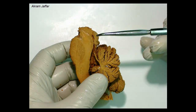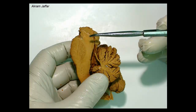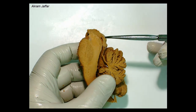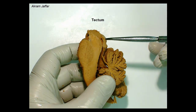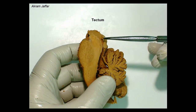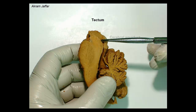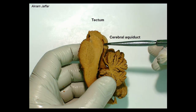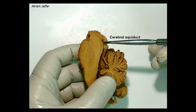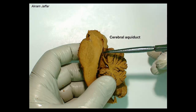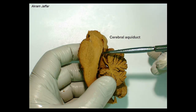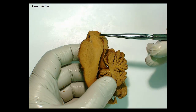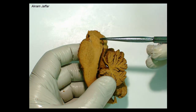Here you can see the midbrain. This is the region of the tectum, which is located behind the cerebral aqueduct. The cerebral aqueduct is the cavity of the midbrain. It connects the fourth ventricle inferiorly and the third ventricle superiorly.